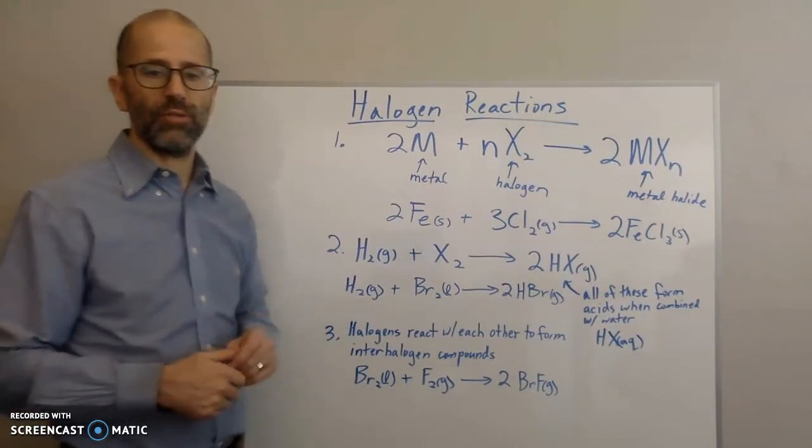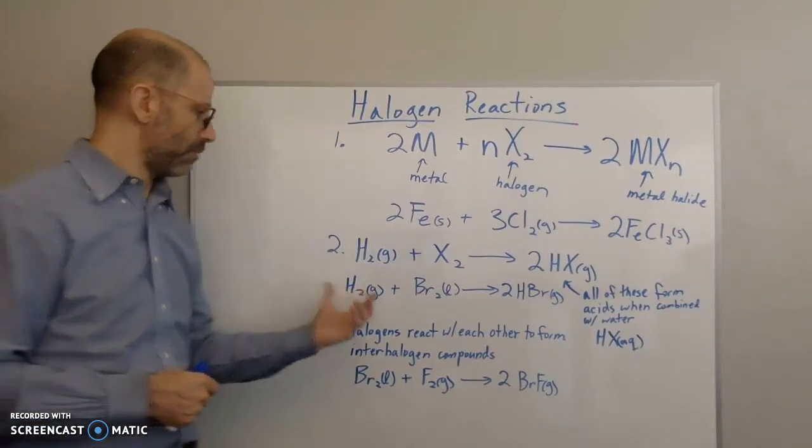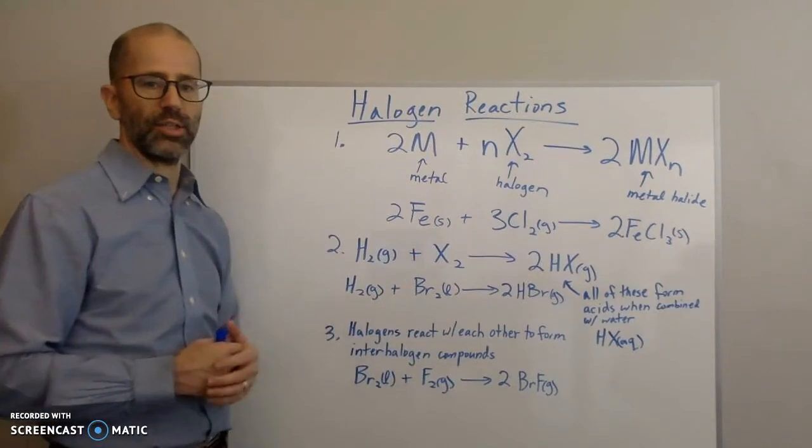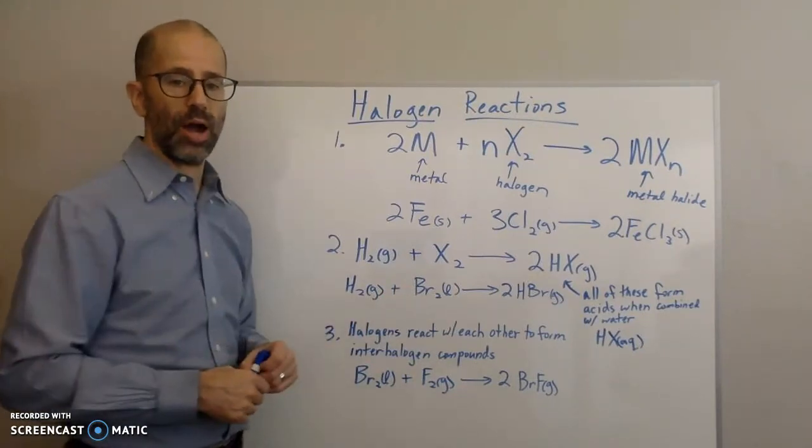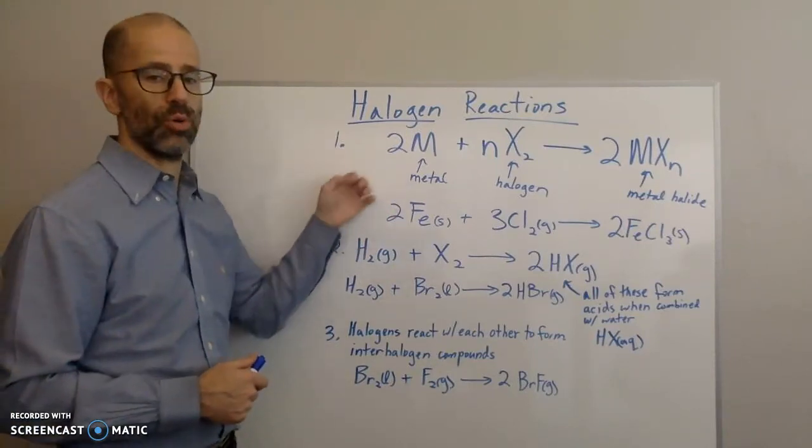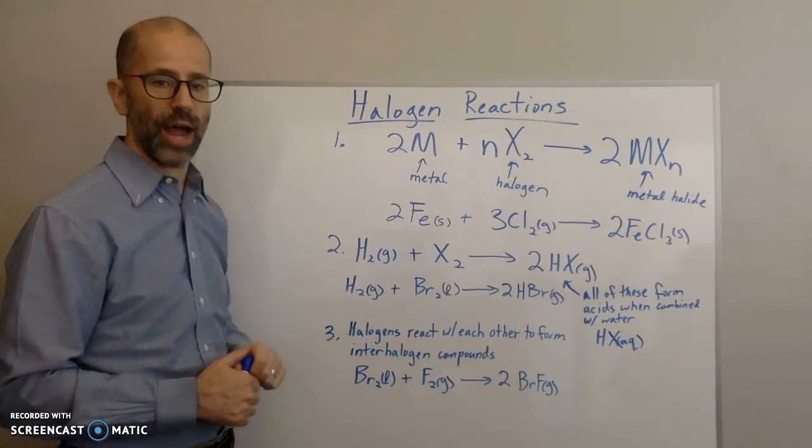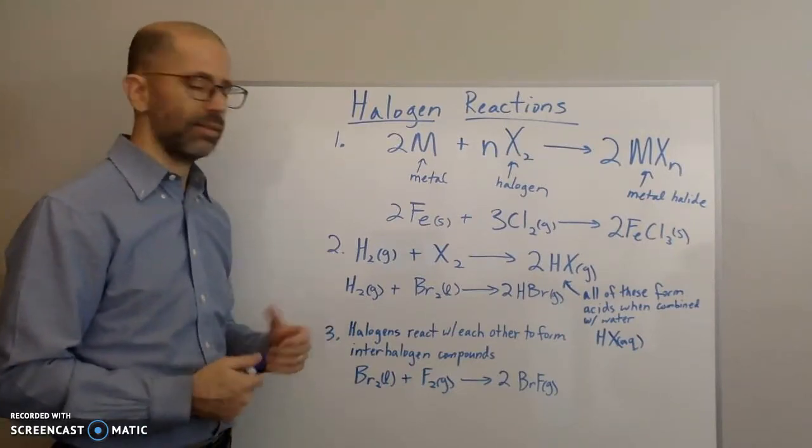So again, if you're asked to produce a reaction or balance an equation and they give you something like a halogen reacting with hydrogen gas, you want to know what the product will be so you can balance the equation. This is useful to know—these common reactions for halogens.